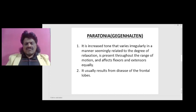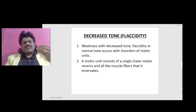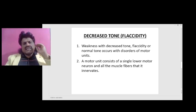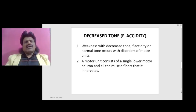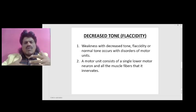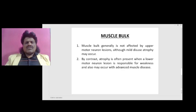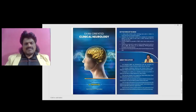Paratonia usually results from diseases of the frontal lobe. Regarding decreased tone: weakness with decreased tone — flaccidity — occurs with disorders of motor units, that is disorders of lower motor neurons. A motor unit consists of a single lower motor neuron and all the muscle fibers it innervates. Muscle bulk is generally not affected by upper motor neuron lesions, though mild disuse atrophy may occur. By contrast, atrophy is often present with lower motor neuron lesions and may also occur with advanced muscle disease.